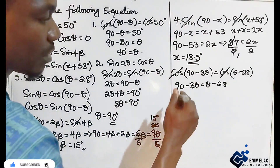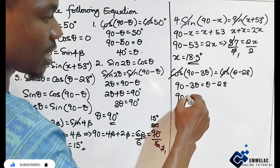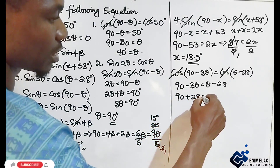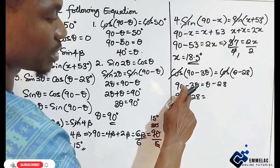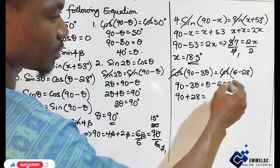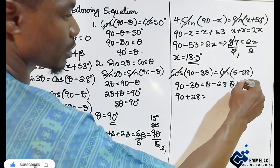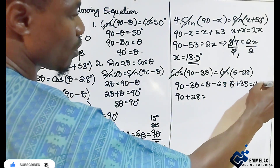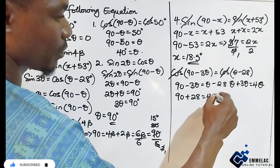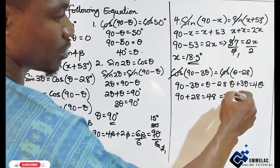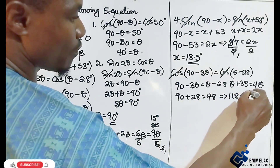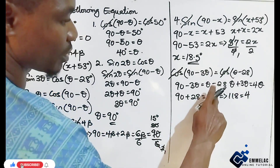Collecting like terms: 90 plus 28 equals theta plus 3 theta, so 118 equals 4 theta.